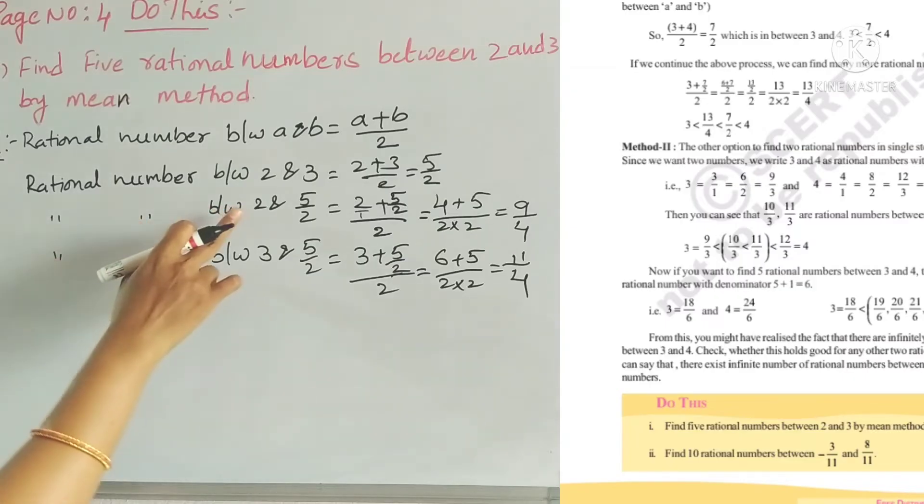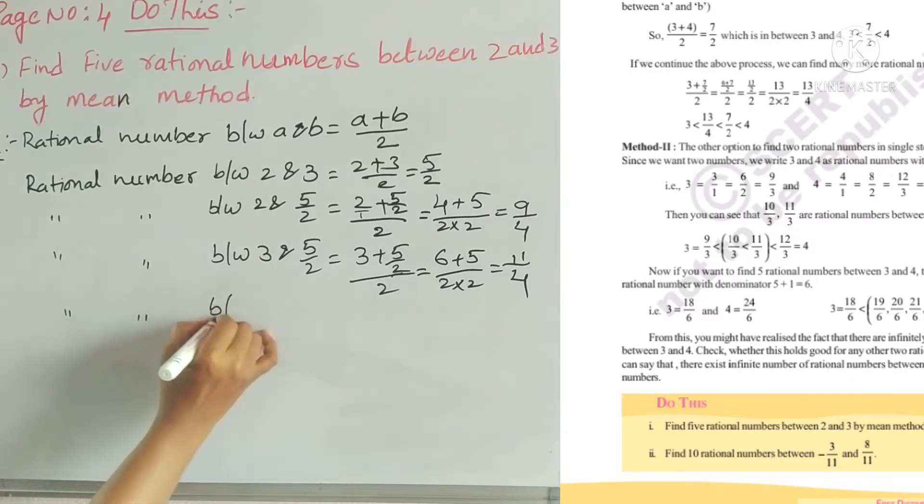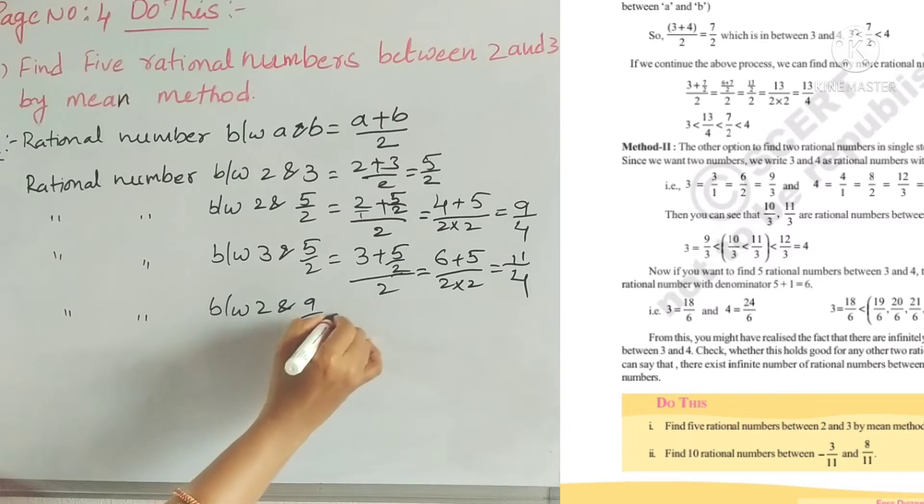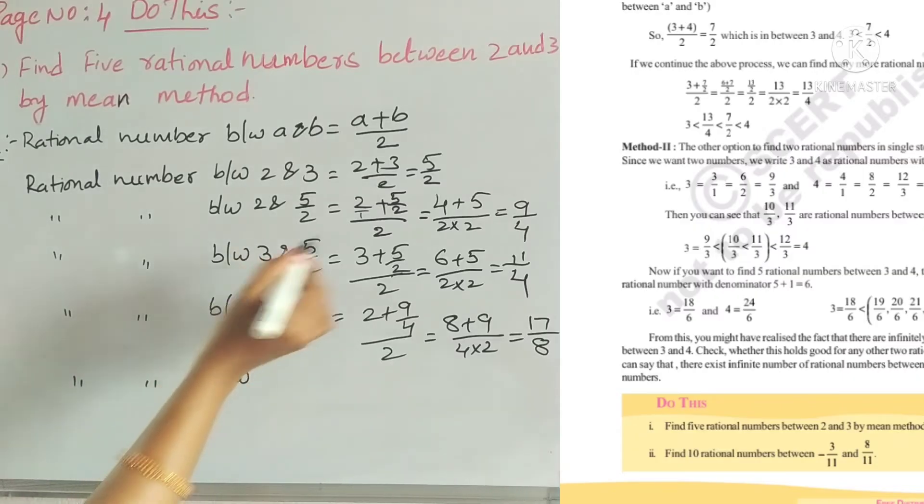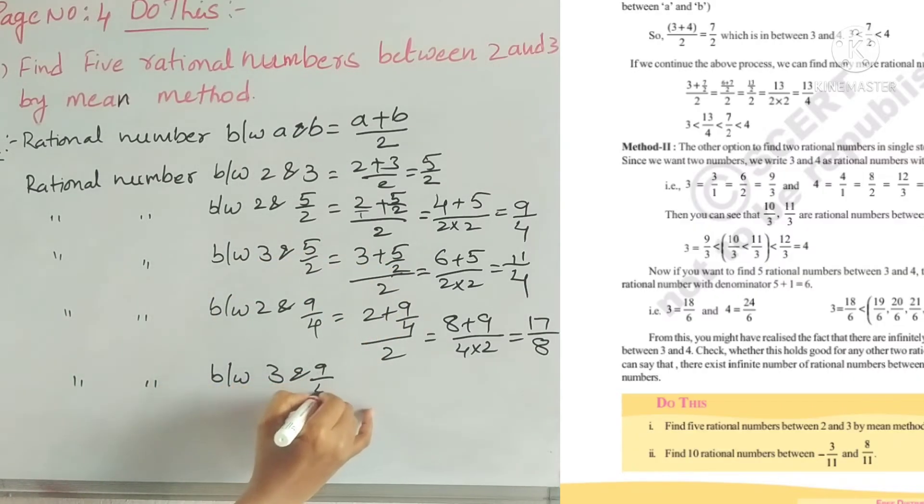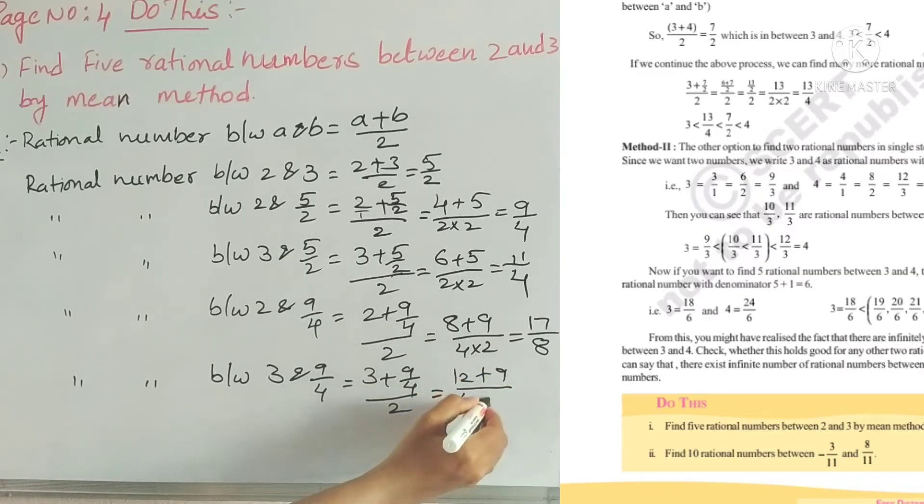Now between 2 and 9 by 4, the rational number is (2 plus 9 by 4) divided by 2, which gives us (4 times 2 is 8, plus 9) by (4 times 2), equals 17 by 8. Similarly, between 3 and 9 by 4, we get (3 plus 9 by 4) divided by 2.